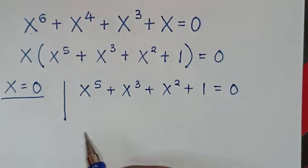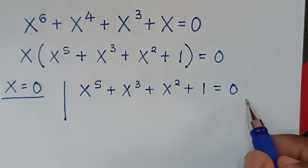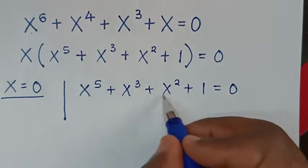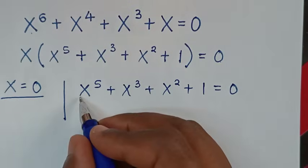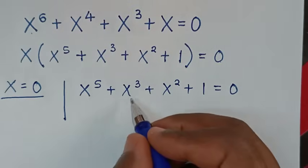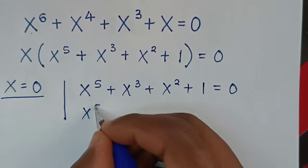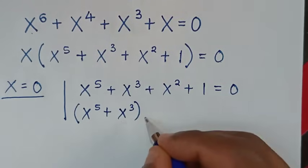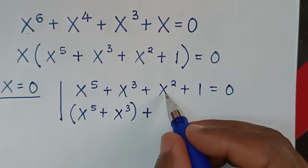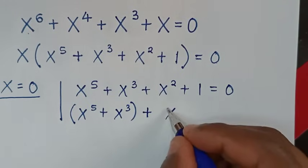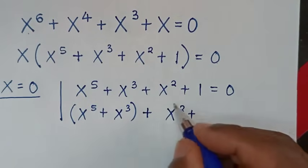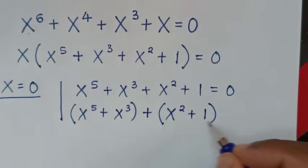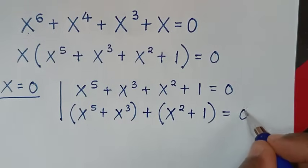Then we'll continue to solve from this equation by placing brackets. It will be x power 5 plus x power 3 in one bracket, then plus x squared plus 1 in another bracket, all equal to 0.